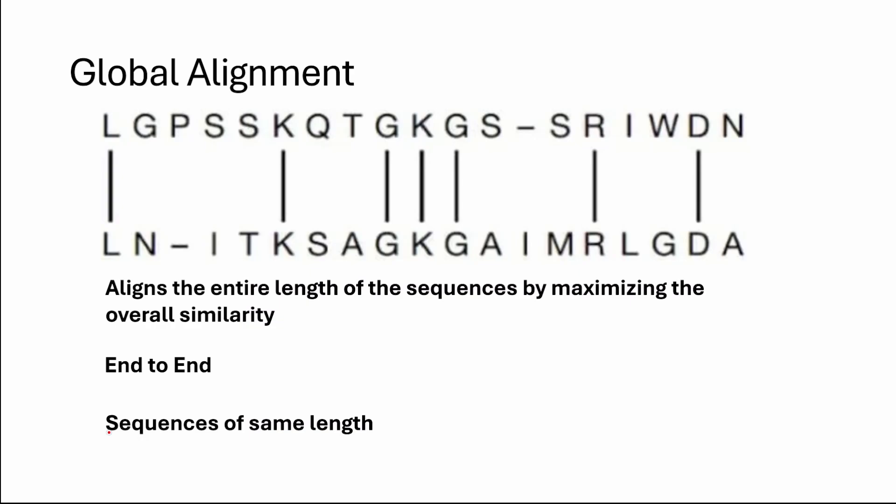Global alignment is very efficient for two sequences when you are looking at each and every letter and want to align every amino acid or DNA position. It aligns the entire length of the sequences by maximizing overall similarity. The sequences most suited for this type of alignment are ones of the same length, with matching regions placed directly above each other, aligned end to end.